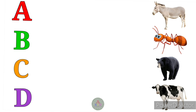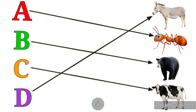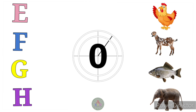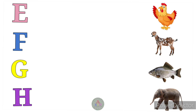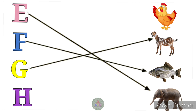A for Ant, B for Bear, C for Cow, D for Donkey. E for Elephant, F for Fish, G for Goat, H for Hen.